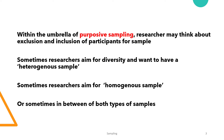Within the umbrella of purposive sampling, a researcher may think about exclusion and inclusion of participants for the selected sample. Sometimes, to get variant and different results, we need a heterogeneous sample, such as in the example of cardiac patients — we may need different age groups or people belonging to different socioeconomic backgrounds.